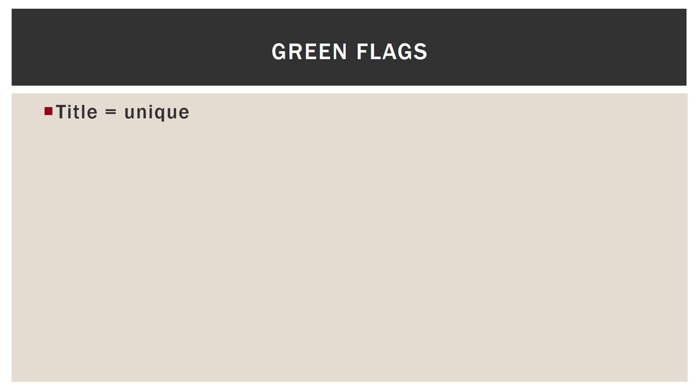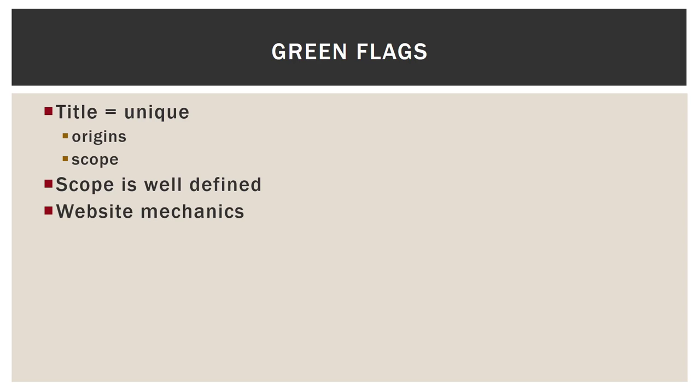The red flags are the things that you don't want to see. Green flags are best practices — things that you do want to see. Starting with the title: the title is unique, the title points to the origins (so if it says it's international, the journal actually is international), and the title points to the scope. That scope is well defined and discipline specific. For website mechanics — remember, not the way it looks; you're not judging fancy versus plain. Website mechanics are things like spelling and grammatical errors. You want to make sure all of the links work so you're not getting any 404 or 504 errors. The link you click should take you to the information that is stated — peer review policy should take you to the information on the peer review policy.